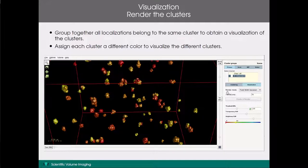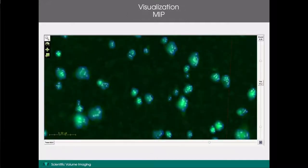Besides visualising the clusters, we also have a MIP pipe. This allows you to use the maximum intensity projection of a selected channel of the data as a reference channel to assess the quality of your clustering. Here we show an example of the MIP in green and in blue we have the clusters of the same data channel. Note that these clusters overlap very well with the higher intensity regions of the MIP, indicating a very good clustering as we find clusters where the localisation density is high, just as we would expect.